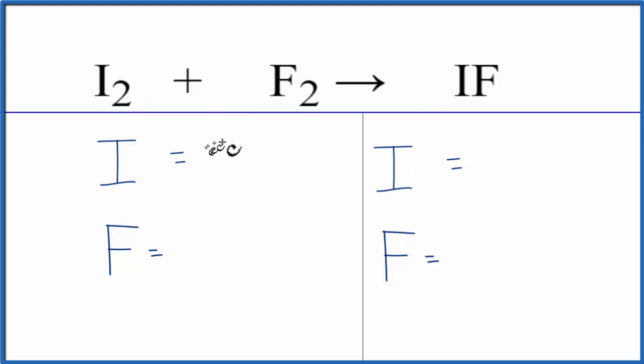So we have two iodine atoms here, and then we have two fluorine atoms. On the product side, it's not written there, but we have a one here, so we have one iodine atom and then one fluorine atom.